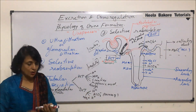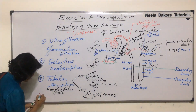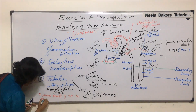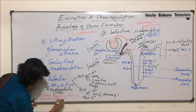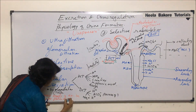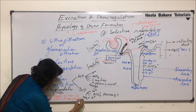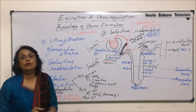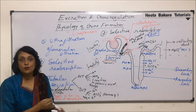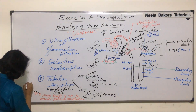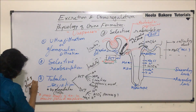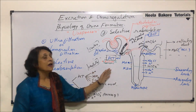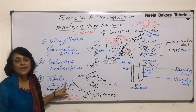Tubular secretion is the main mode of excretion in marine fishes and some amphibians. The reason this is the main mode of excretion in these animals is that they do not have a glomerulus where filtration can take place — absence of glomerulus. That is why most of the substances are eliminated by tubular secretion in these organisms.